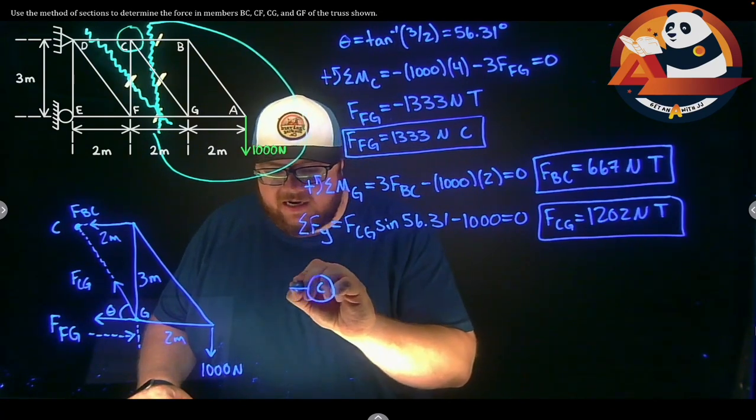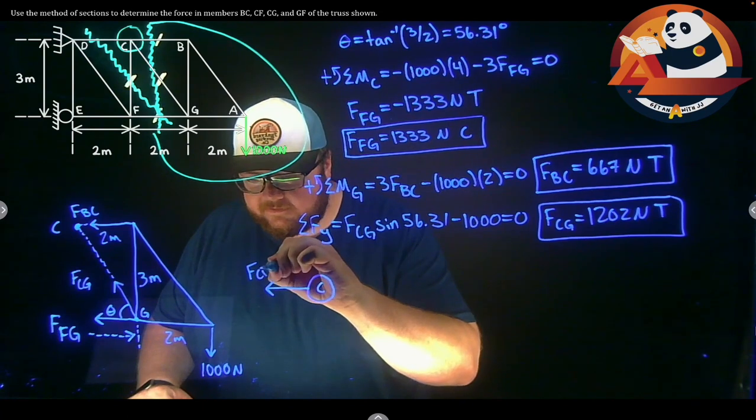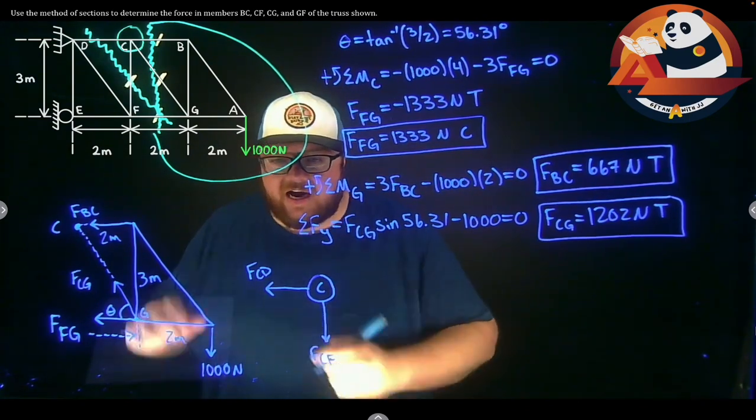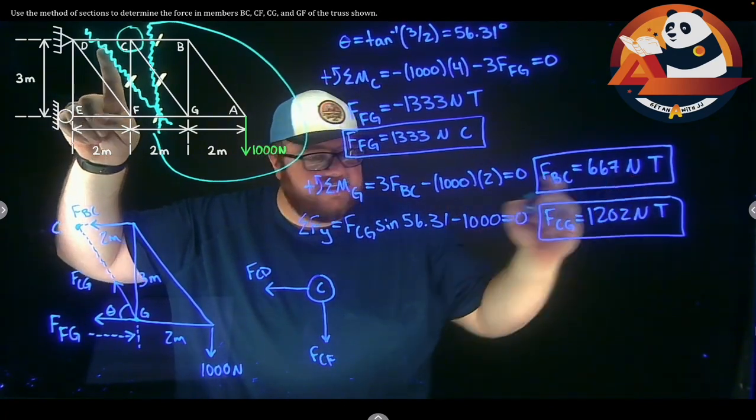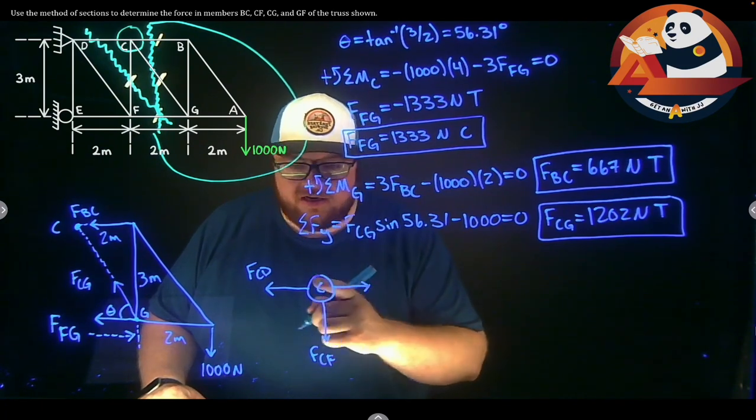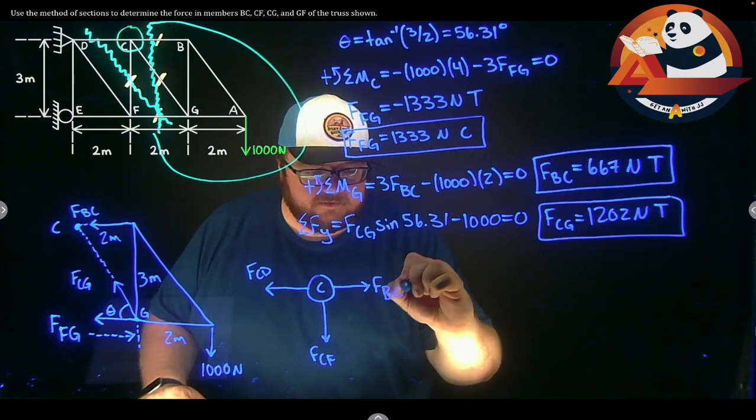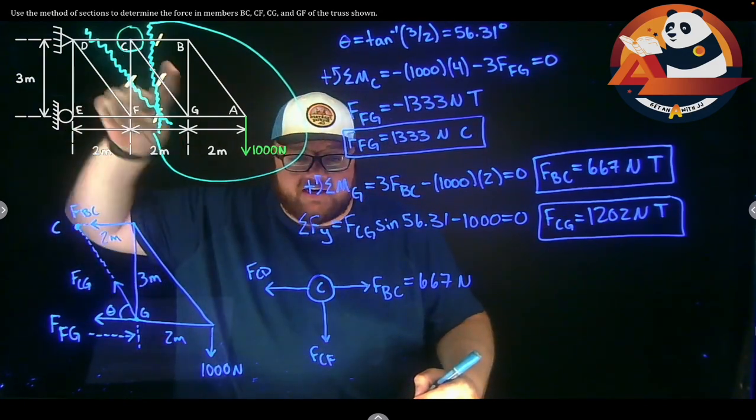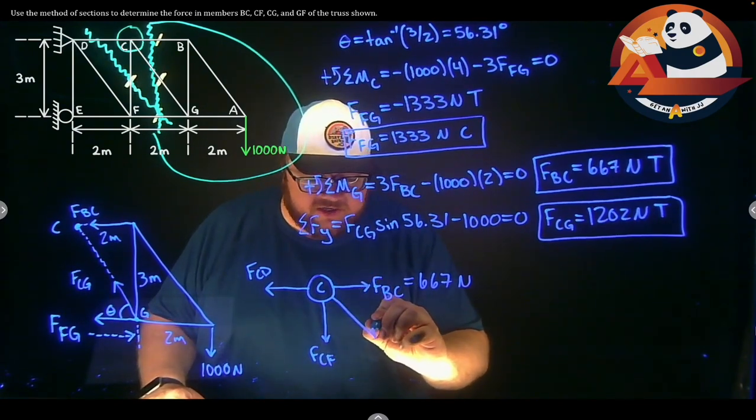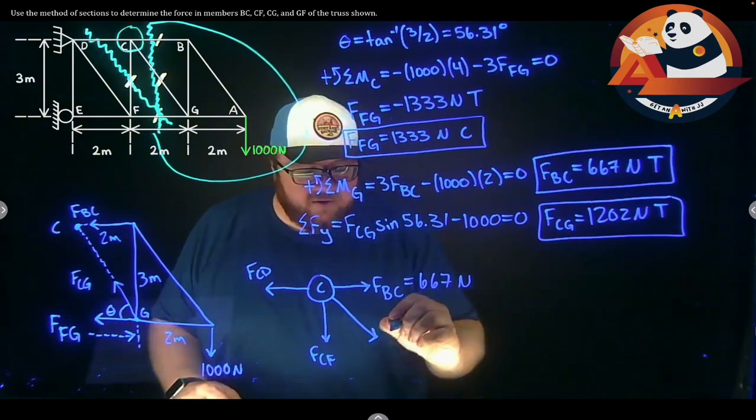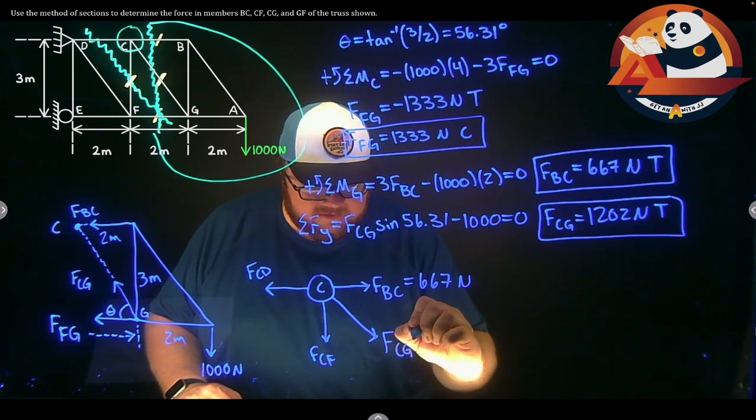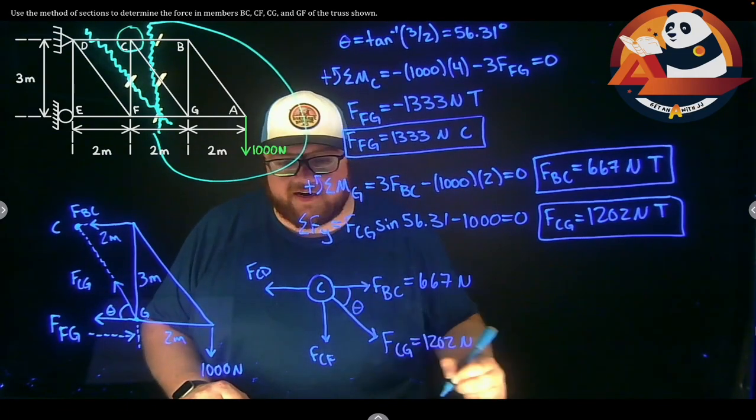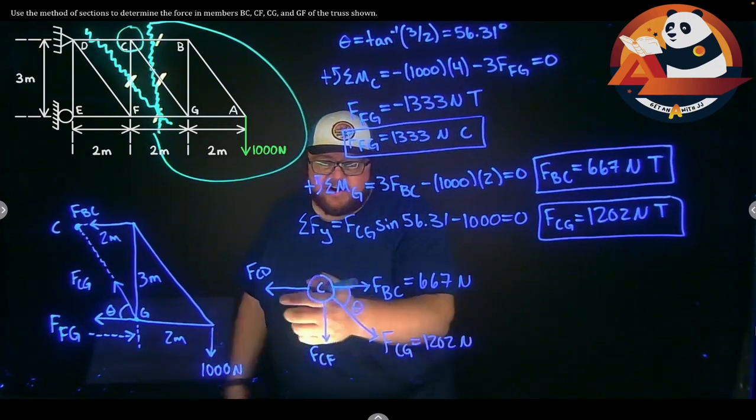That would get me FCD, unknown in tension, going to the left. We would have FCF, unknown, so we put it in as tension, going straight down. I would have member BC. I got that one before. It's 667 in tension. So let's put that in, still in tension, acting away from our pin. FBC is 667 newtons in tension. And then our last one, I remember CG in here as well. I got just a second ago that it was 1202 in tension. So going down and to the right here, still in tension, acting away from our pin, FCG is 1202 newtons, and it's also in tension. And my angle here is the exact same as it was before, still theta.